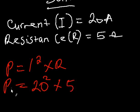So that is power is equal to 20 squared, which is our current, multiplied by 5, which is our resistance.